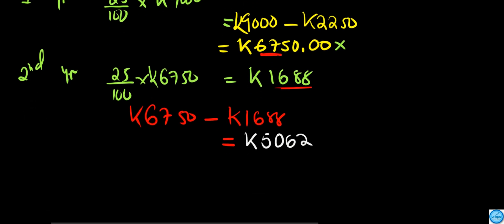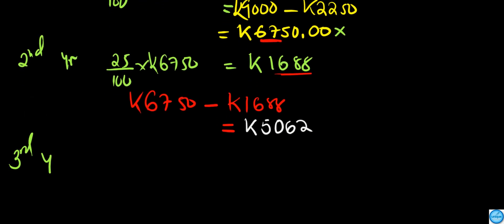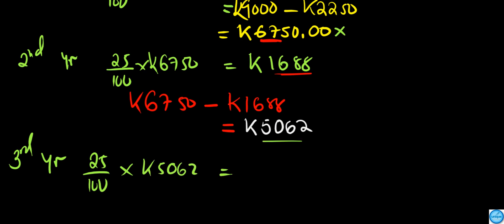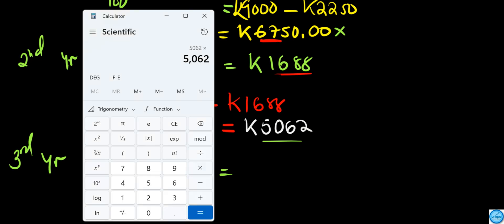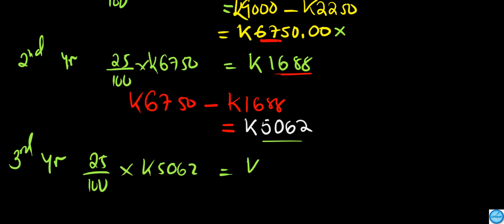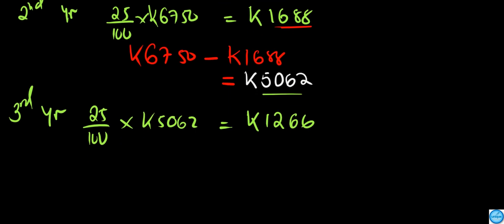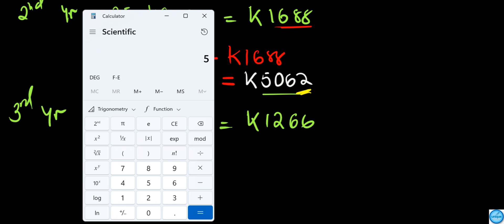In the third year, we need to find 25% of the previous book value, which is 5,062. That gives us 1,266 as the depreciation. To find the remaining value at the end of year three, we do 5,062 minus 1,266.